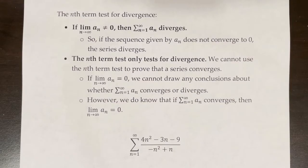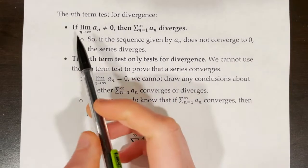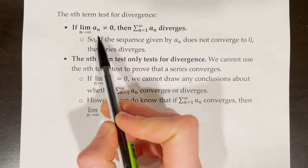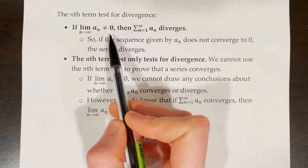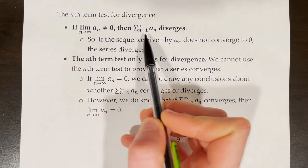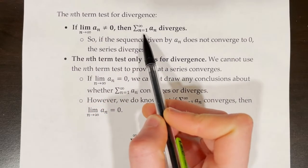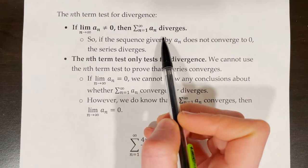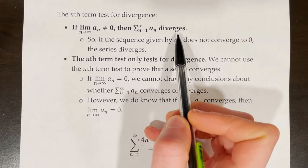In this video, we will be working with the nth term test for divergence, which states that if the limit as n approaches infinity of a sub n is not equal to 0, then the series from n equals 1 to infinity of a sub n diverges.